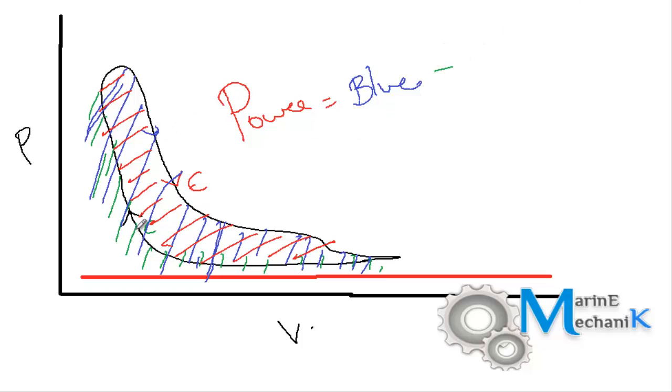Minus the area under the compression curve, that's the green color. That's going to give the indicated power within the cylinder.